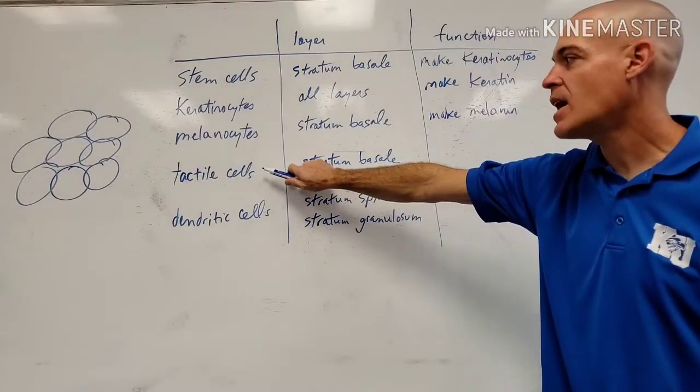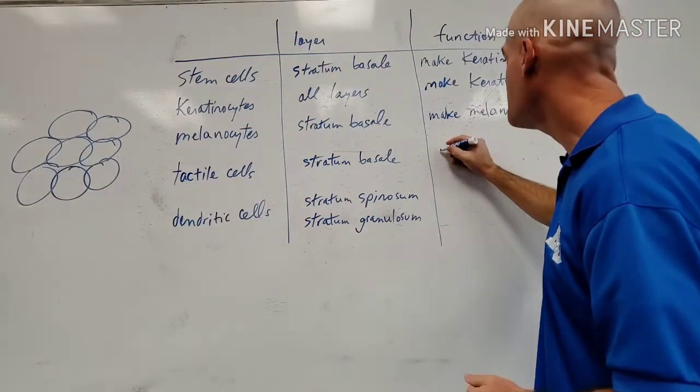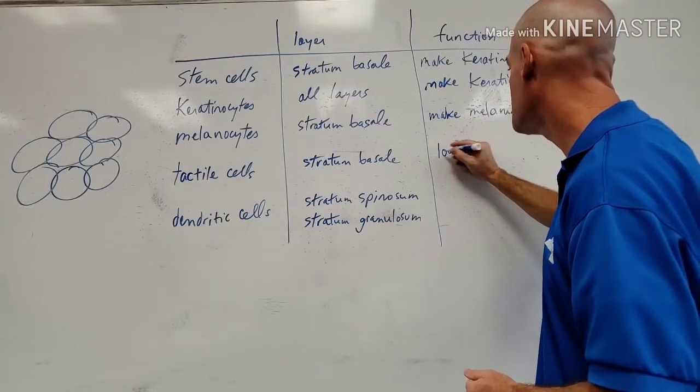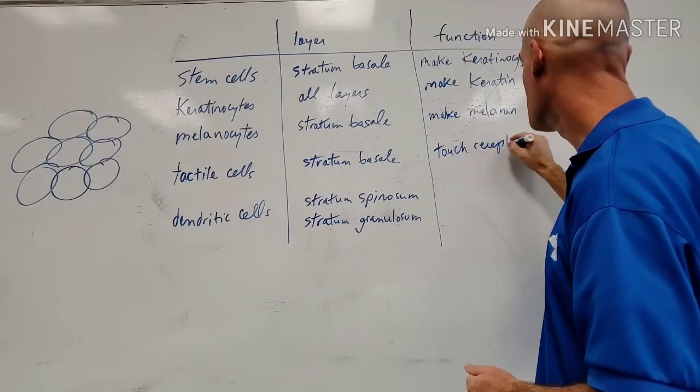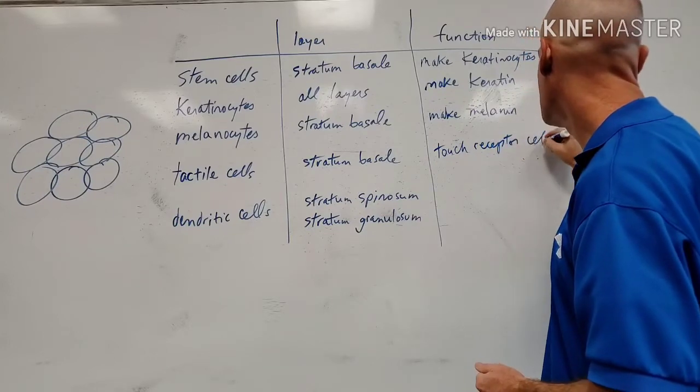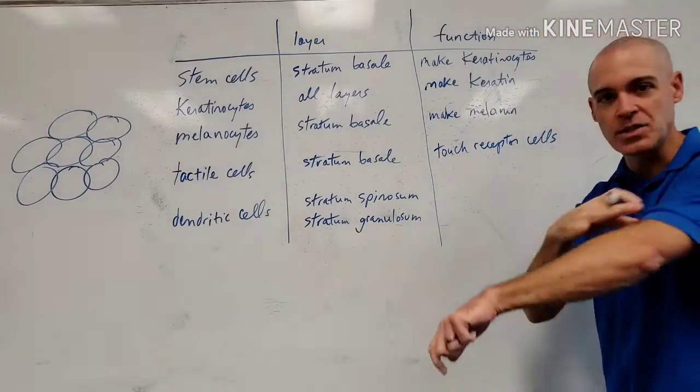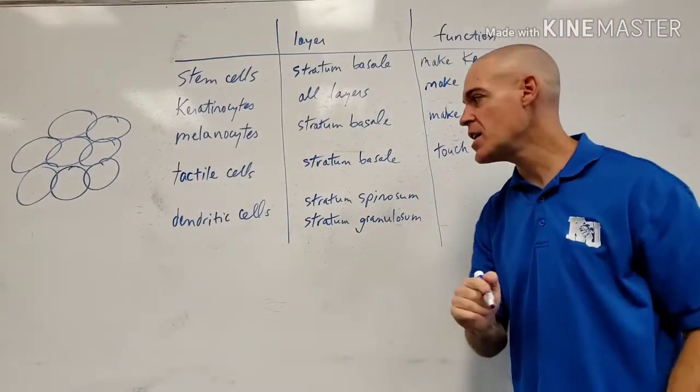We have the tactile cells next. They're also in the stratum basale. What do they do? They are our touch receptor cells. That gives us the ability to feel on the surface of the skin.